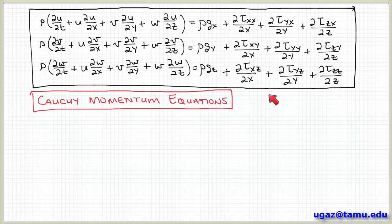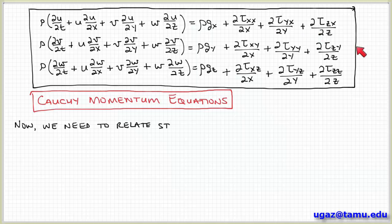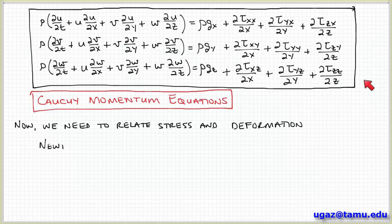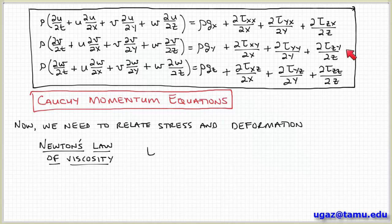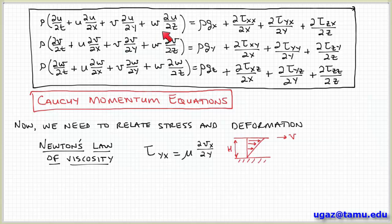The Cauchy momentum equations express Newton's second law applied to a fluid element: net rate of change of momentum equals momentum carried into and out of the control volume by flow plus the sum of forces. However, while correct, this form is not particularly useful because we still need to evaluate the shear stresses. Ideally, we want a relationship between the shear stress and the velocity field, since we've already expressed the flow terms in terms of velocity. If we can relate stress to deformation, we'd have a system of equations in only the velocity field.